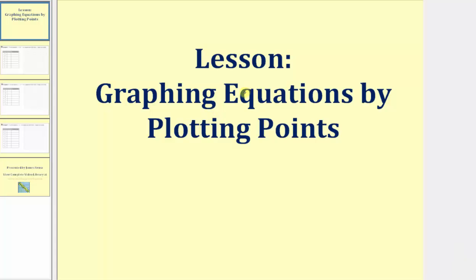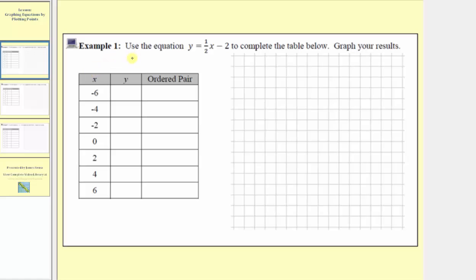Welcome to part one of our lesson on graphing equations by plotting points. In example one, we want to use the equation y equals one half x minus two to complete the table below and then graph the results. Looking at the table, notice we're given the input values or x values. We want to find the corresponding output values or y values, then write the ordered pairs, and then plot the points on the coordinate plane.